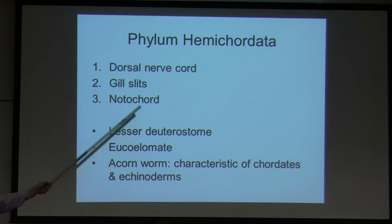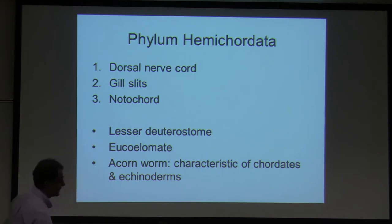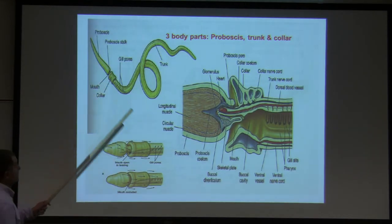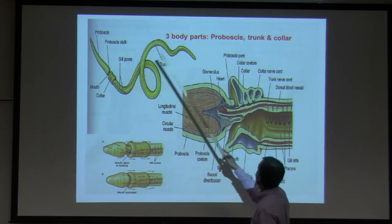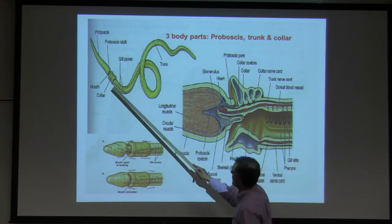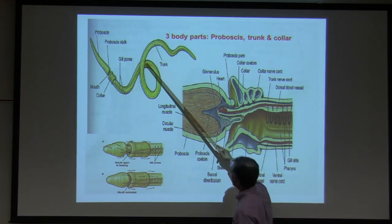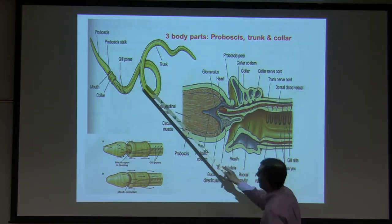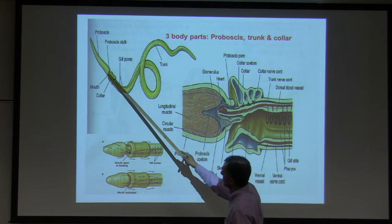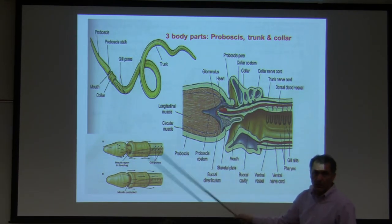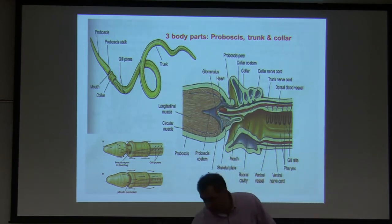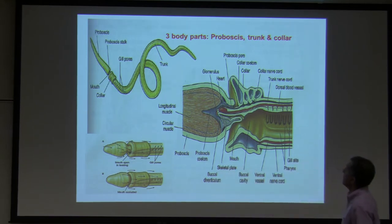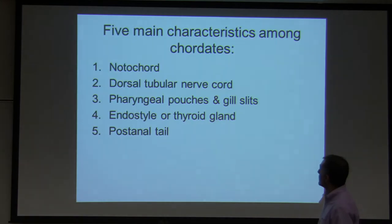One example of this animal is the acorn worm. It has characteristics of chordates and echinoderms both. There are three body parts of the acorn worm: the proboscis, the trunk — which is the bulk of the body — and the collar, which is around the mouth area.